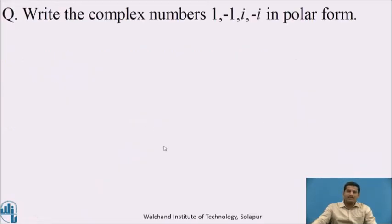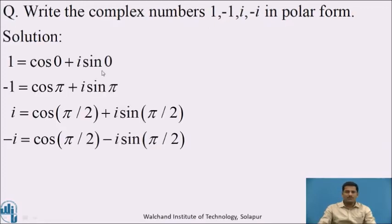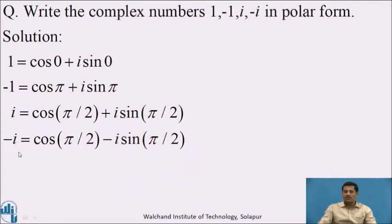Pause this video and write down the complex numbers 1, −1, i, −i in polar form. Now, these are standard complex numbers with standard polar forms: 1 = cos 0 + i sin 0; −1 = cos π + i sin π; i = cos(π/2) + i sin(π/2); −i = cos(π/2) − i sin(π/2).